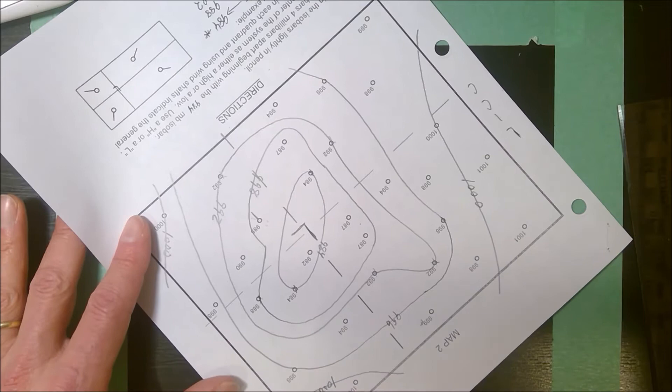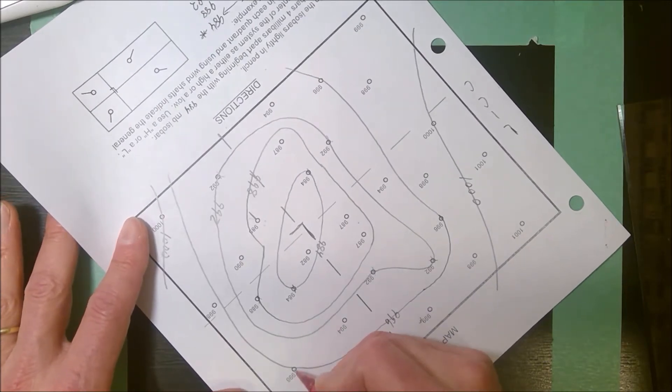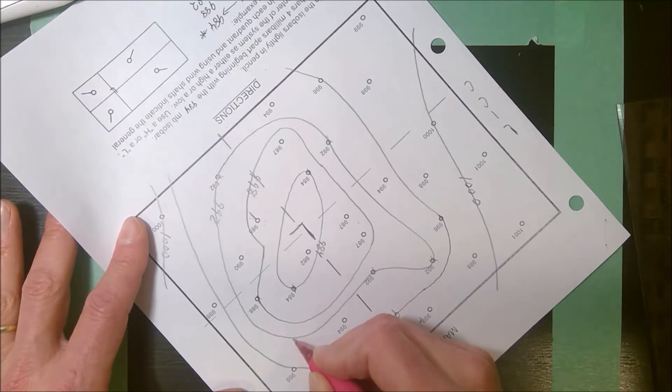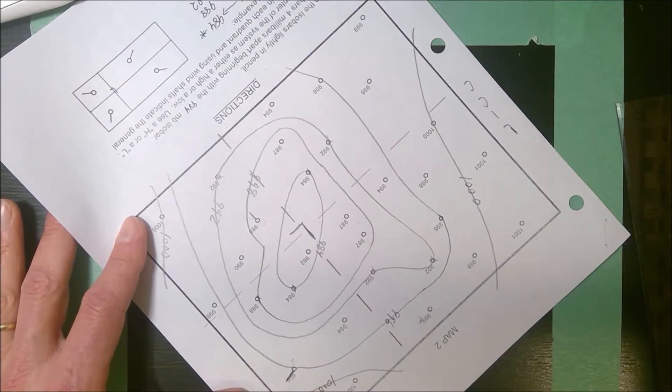I flip around to this quadrant. May as well do this 996. It's going to blow towards the center from the higher to the lower isobar. So I do pressure gradient, goes straight, Coriolis, and then my wind shaft might be in that direction.